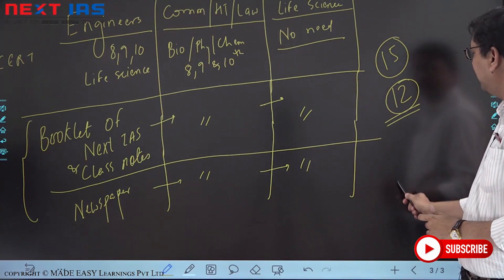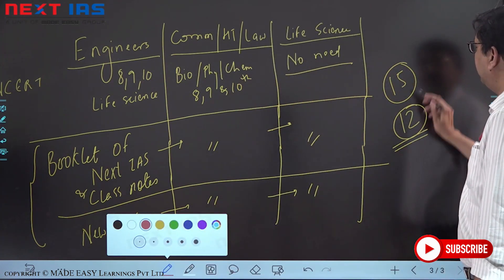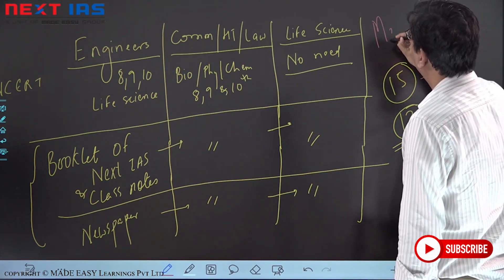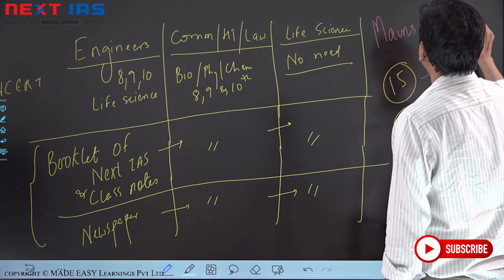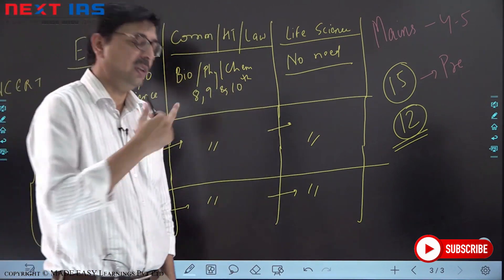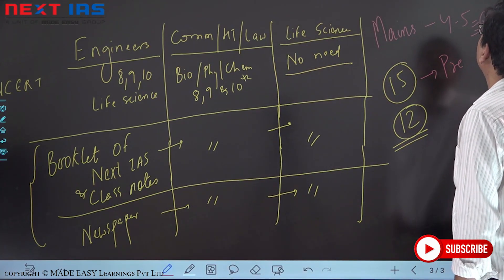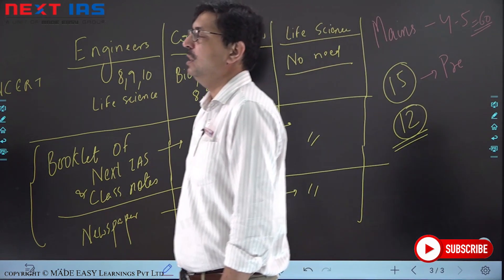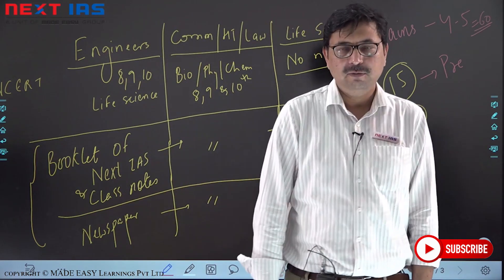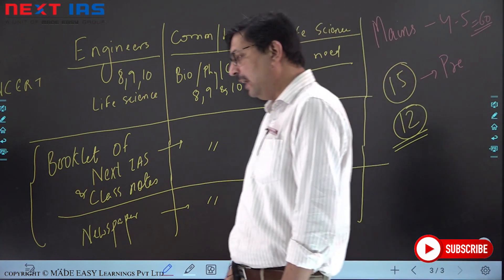In mains, the number of questions from science and technology are four to five questions. Now four to five questions, each question, three question 10 marker, two question 15 marker. That means 60 marks out of 250. 60 marks means 25% of your paper will be from science and technology. Invariably one essay is on some science and technology topic. Obviously who are not very good with that Shakespearean English, that is a lifeline which you people have got and you must ensure that you capitalize on it.